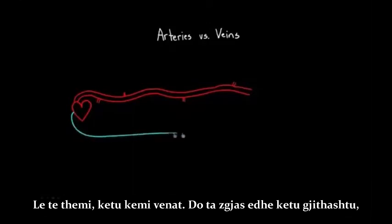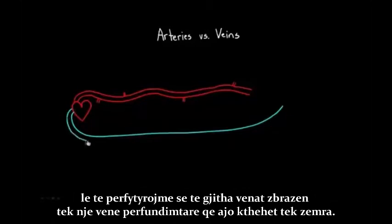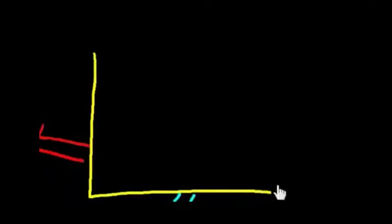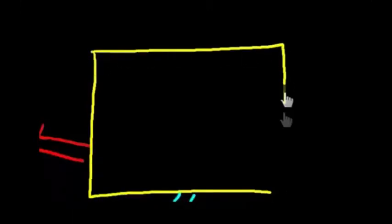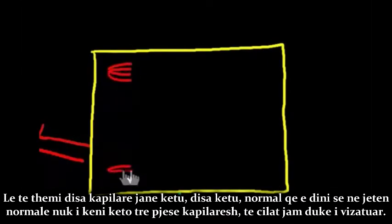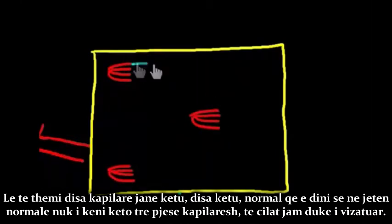So here we have the veins. I'm going to stretch that out as well. Let's imagine that all of the veins are dumping into this one final vein that gets back to the heart. I'll draw the branches coming into the vein here and here. We know that the arteries and the veins are trying to get blood out to the capillaries. Let me show you what a zoomed-in version might look like. So we've got some capillaries here, and maybe some here and here. In real life, you don't have just three sets of capillary beds — you have thousands and thousands.